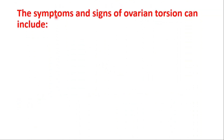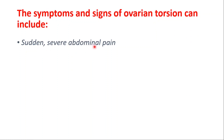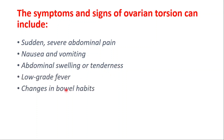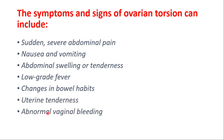The symptoms and signs of ovarian torsion can include sudden severe abdominal pain, nausea and vomiting, abdominal swelling or tenderness, low-grade fever, changes in bowel habits, uterine tenderness, and abnormal vaginal bleeding.